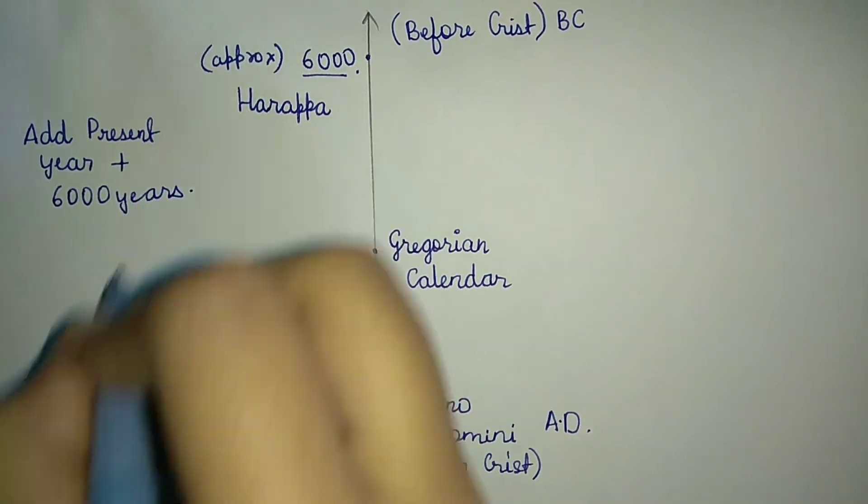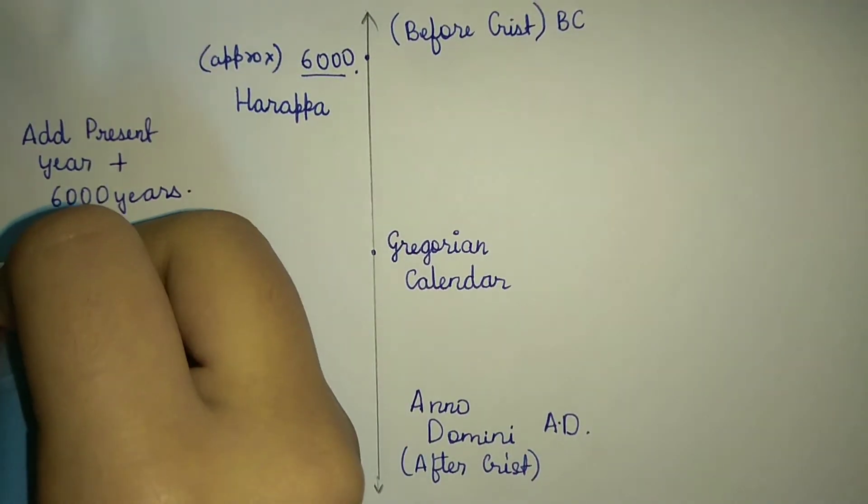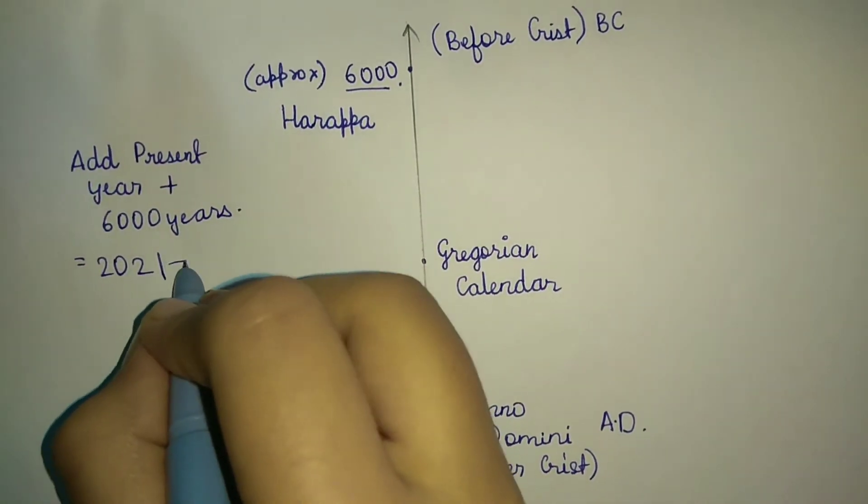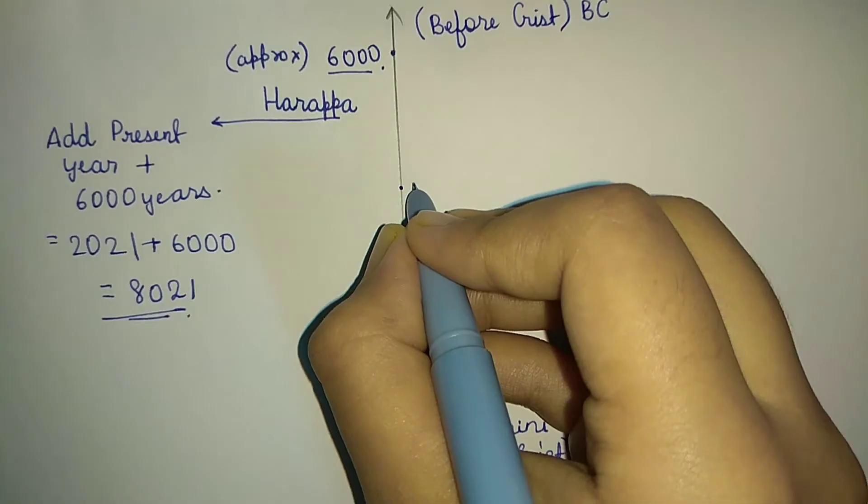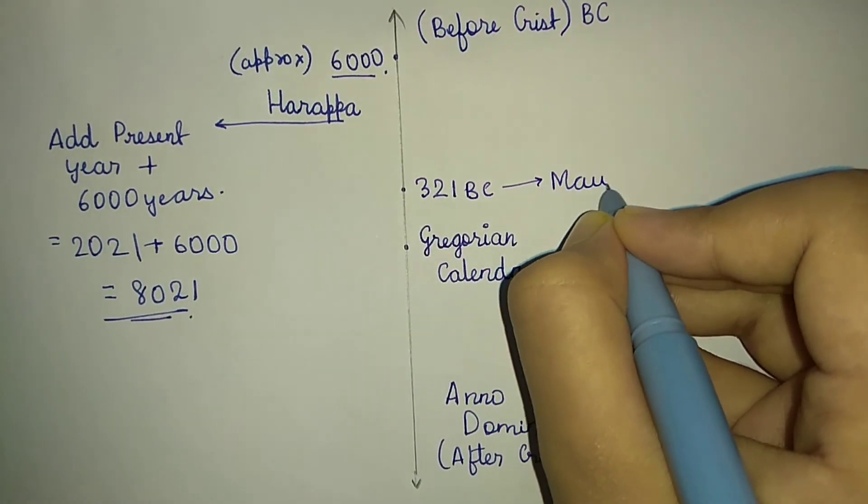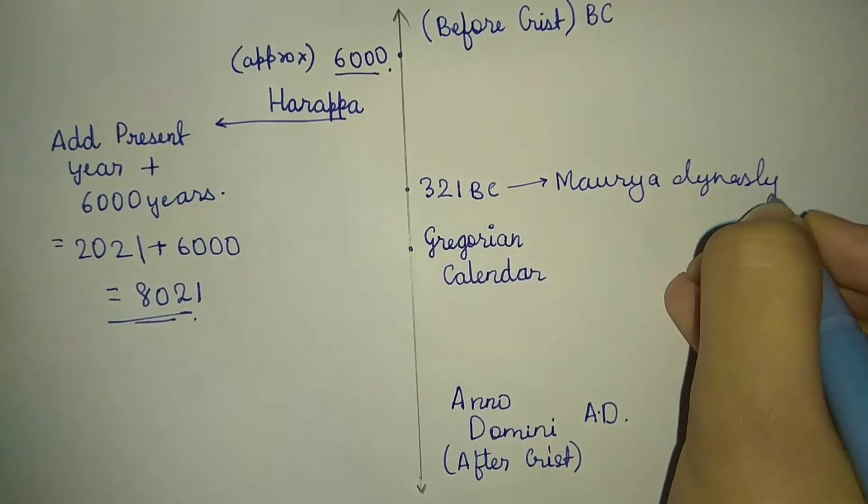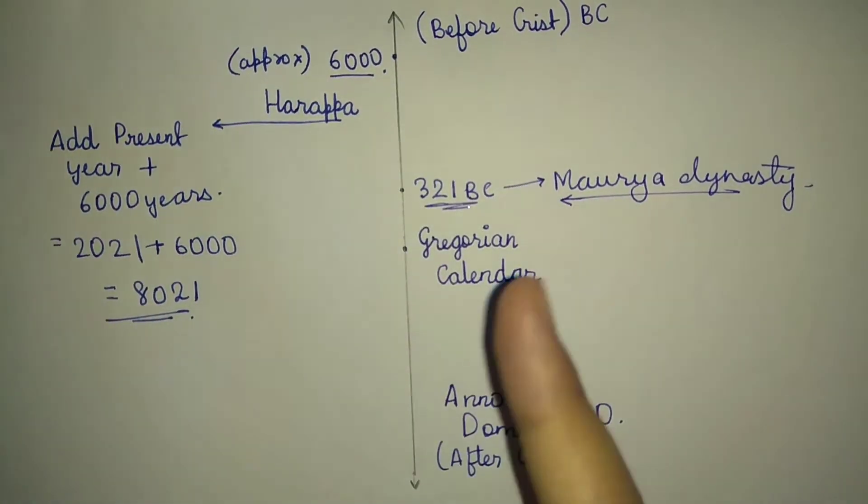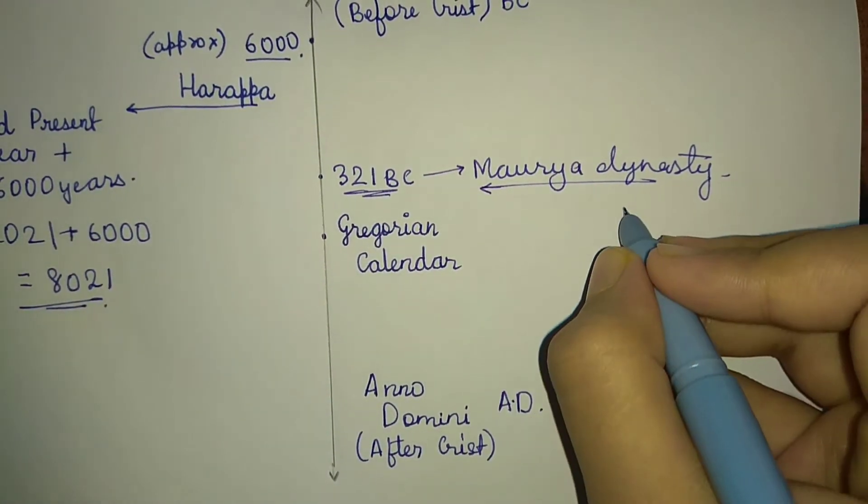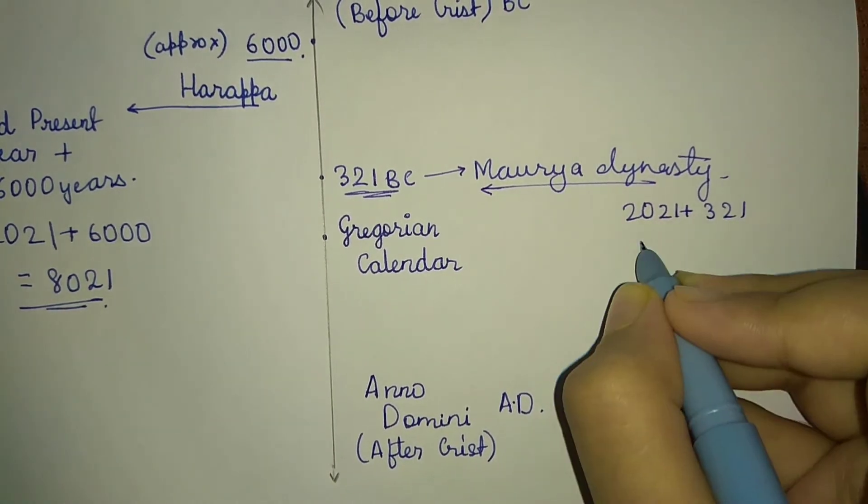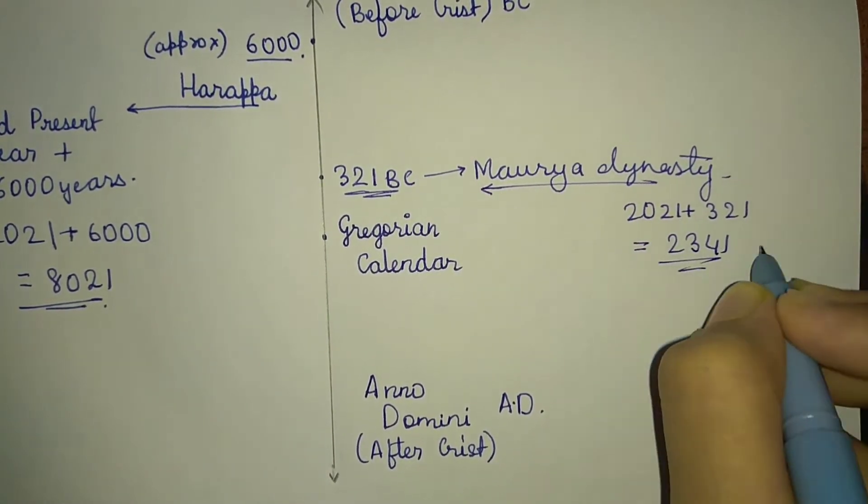Let's take another example: the Maurya Dynasty, which formed in 321 BC. We add 2021 + 321, which equals 2341. So the Maurya Dynasty was formed 2341 years ago.